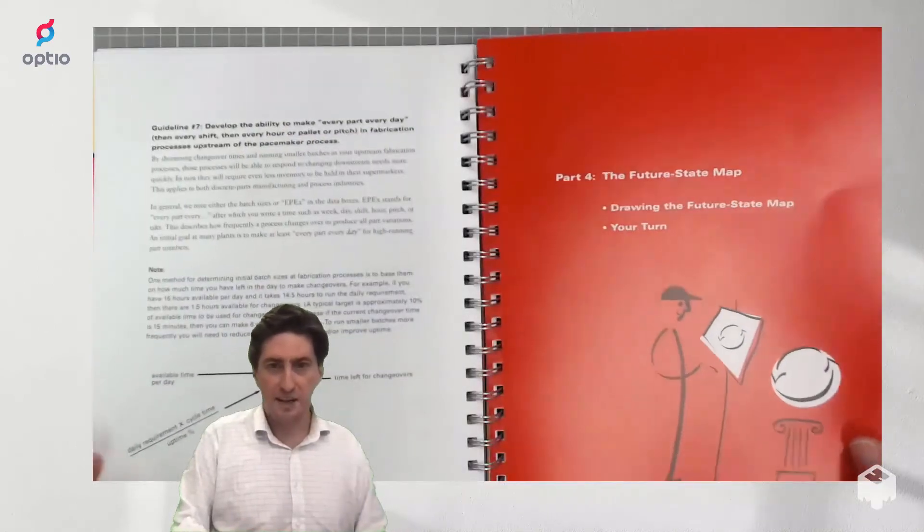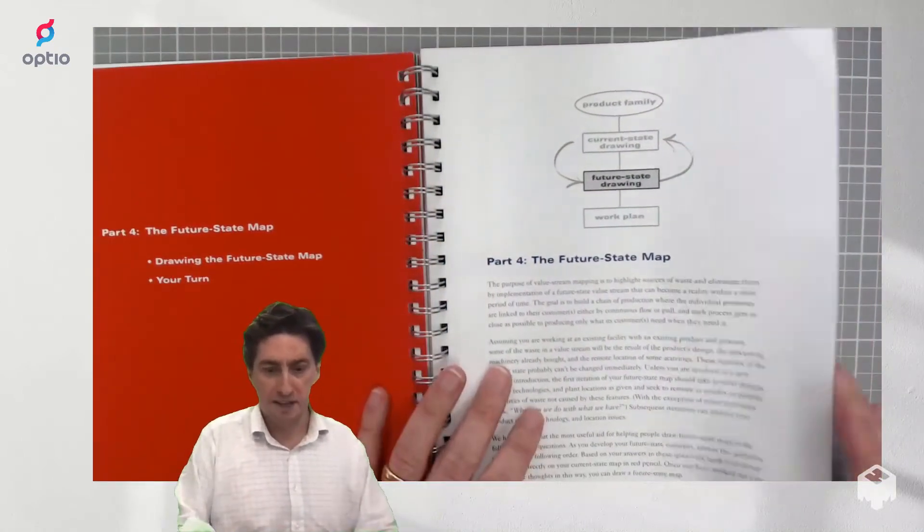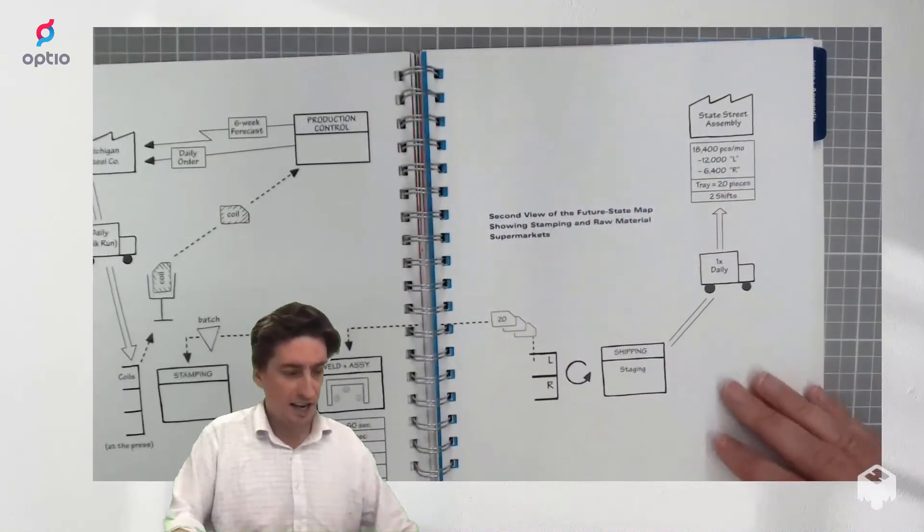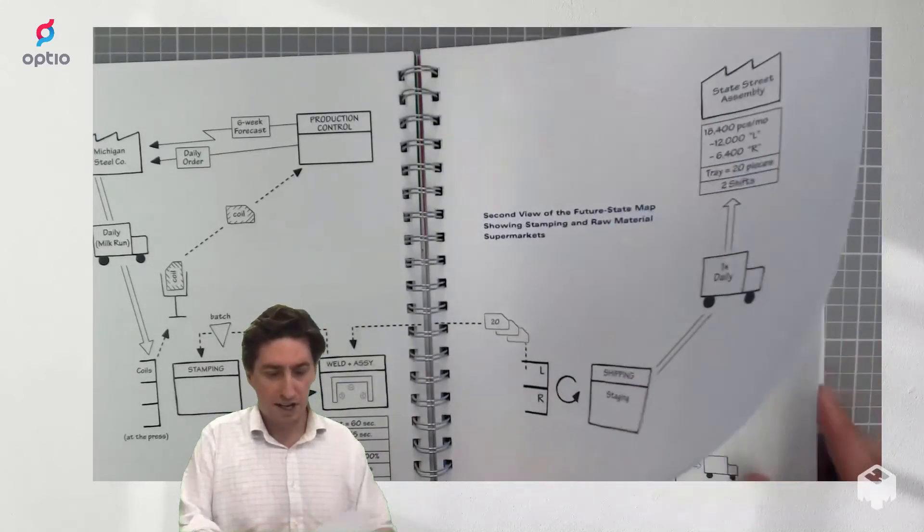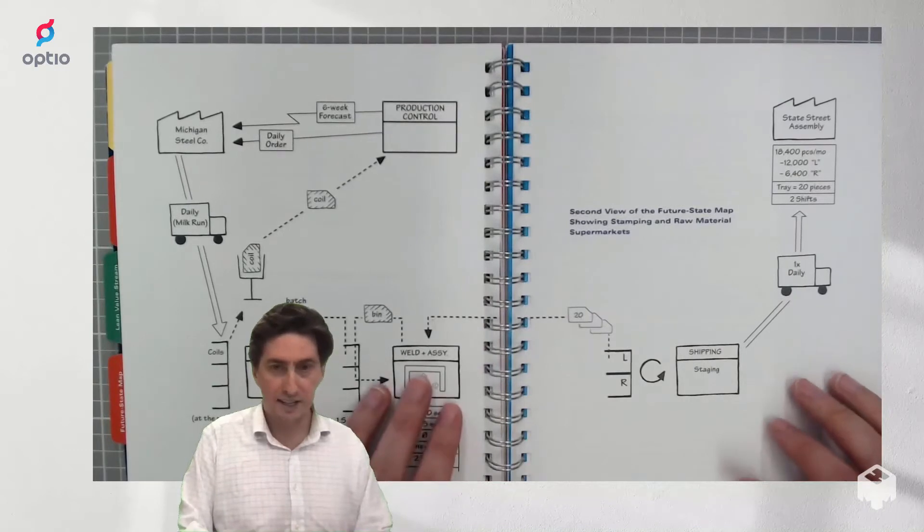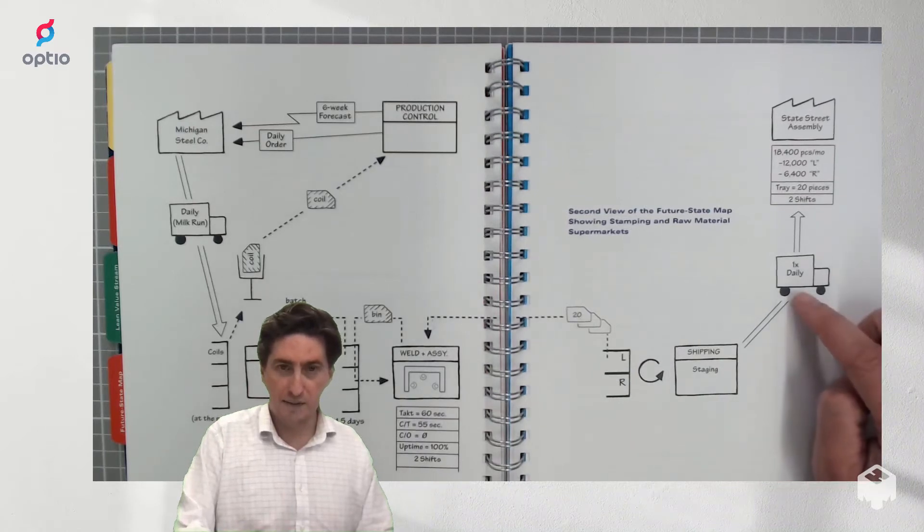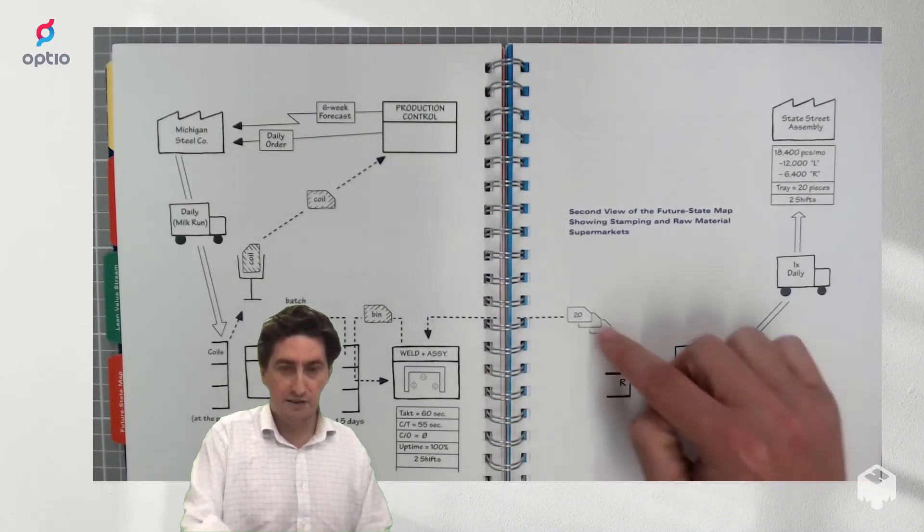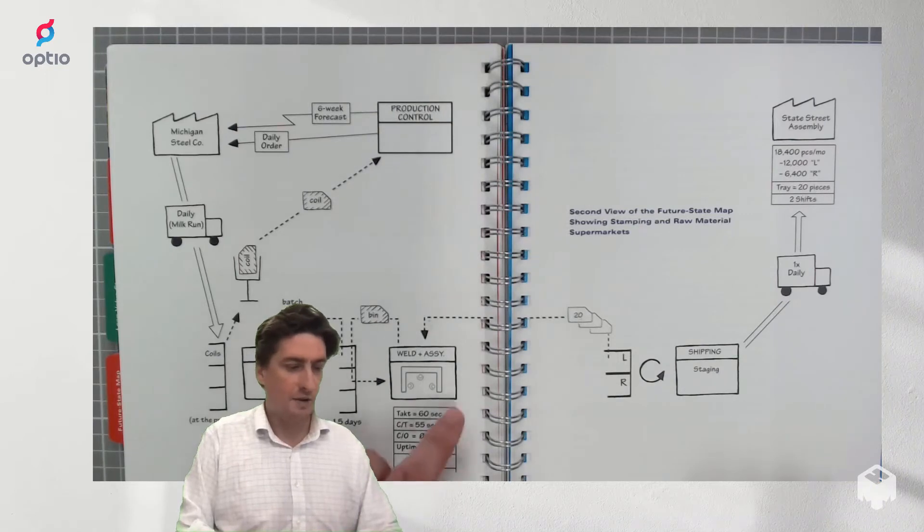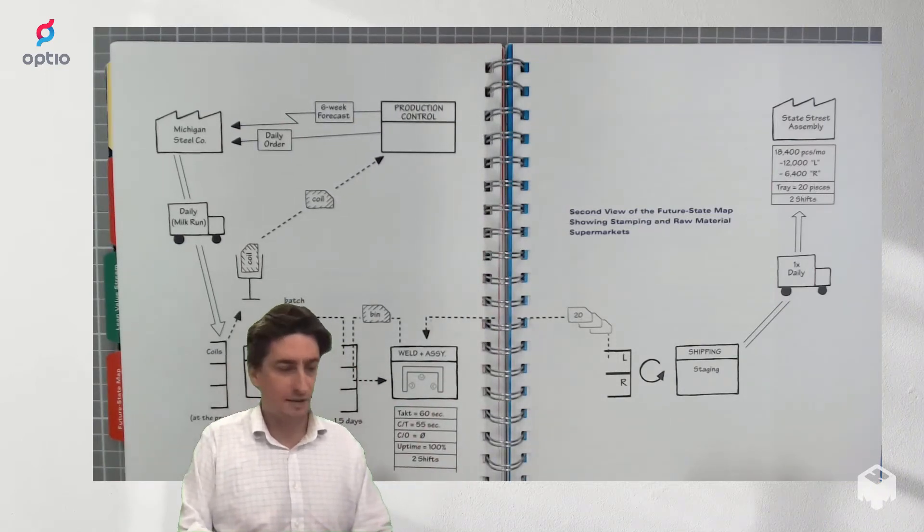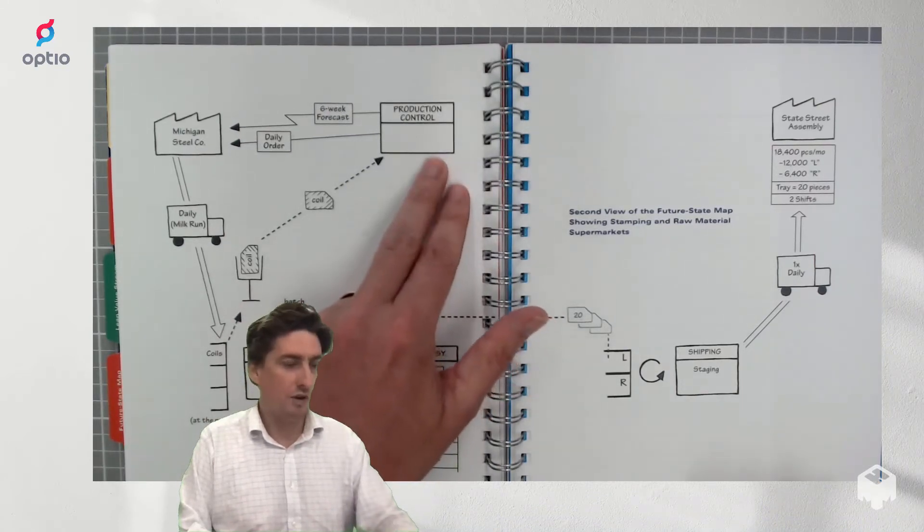So once you understand this the book teaches you how to draw the future state map which is an optimal true north kind of scenario that you want to accomplish. In this case you will see it's dramatically simplified from the original one. You have now much less stations, welding and assembly are now a single piece flow manufacturing cell, and customers order directly from shipping from the warehouse which pulls from the manufacturing floor to assemble more of these things which then pulls from the stamping department to make more of these stamp parts and once it runs out of coils the coil people will tell the production control to order more from the supplier.